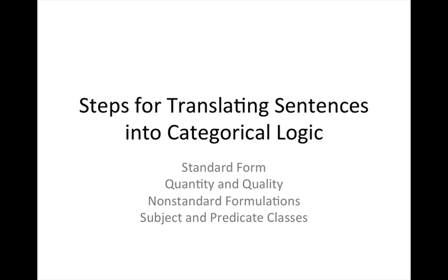Today we're going to talk about translating sentences into standard form for categorical propositions. We do this so as to organize the logical structure of the sentence more precisely, to make the logical structure of the sentence clear. We'll cover the following topics: standard form, quantity and quality, several non-standard formulations, and identifying subject and predicate classes and articulating them in standard form.